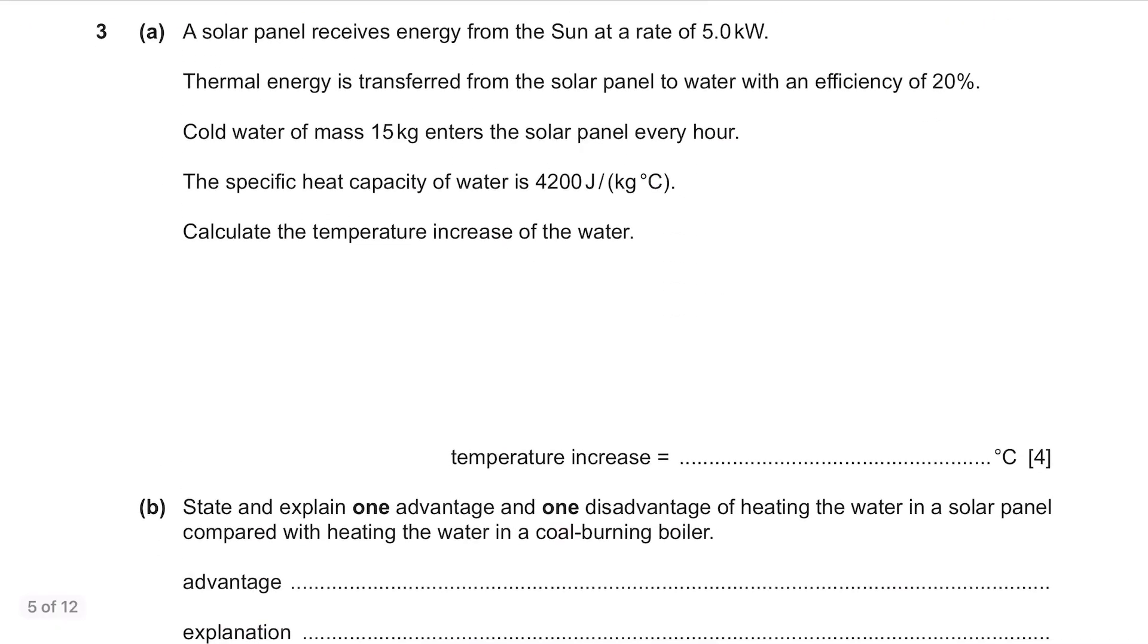Question 3. Part A. A solar panel receives energy from the sun at a rate of 5.0 kW. Thermal energy is transferred from the solar panel to water with an efficiency of 20%. Cold water of mass 15 kg enters the solar panel every hour. The specific heat capacity of water is 4200 joules per kg degree Celsius. Calculate the temperature increase of the water. First identify what kind of information we're given with.